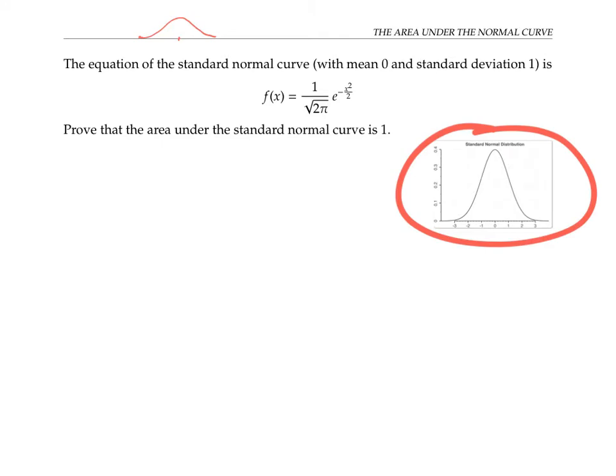And it turns out that this equation, 1 over the square root of 2π times e to the minus x squared over 2, gives you this exact shape of the standard normal curve.